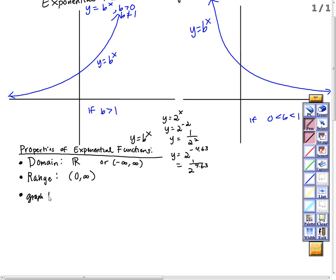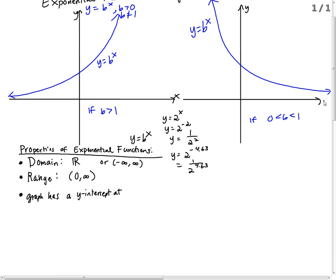The graph has a y-intercept. For both cases — where b is bigger than 1 and where b is a fraction — where does the graph cross the y-axis? At the y-intercept. In this case, it's the point 0, what? If we let y equal b to the 0, what is b to the 0? As long as b is not 0, anything to the 0 power is 1. So this is 0, 1. Both graphs have a y-intercept at 0, 1.